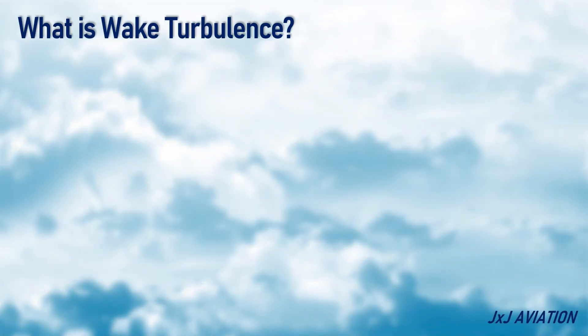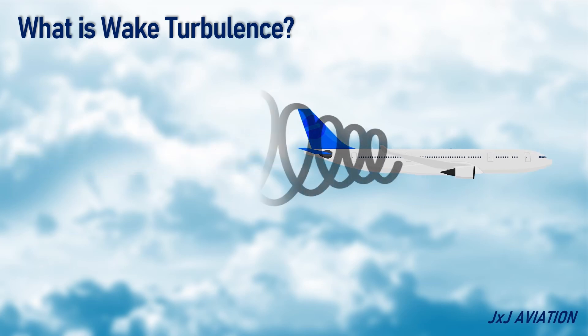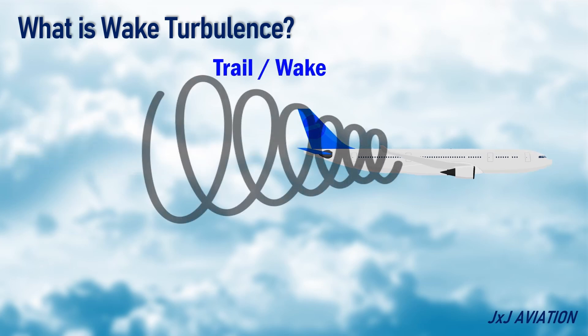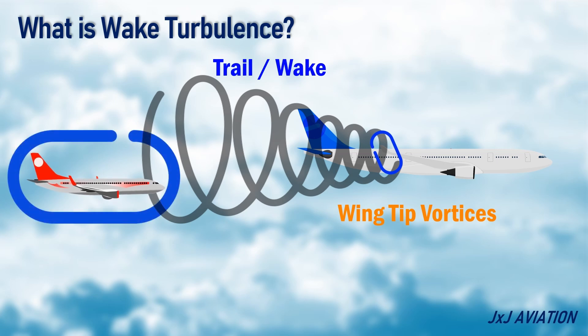What is wake turbulence? When an aircraft is moving, it leaves a trail or wake behind it. This wake is generated by the wingtip vortices. When a different aircraft flies into this wake, it will experience sudden movements and vibrations, which is called wake turbulence.